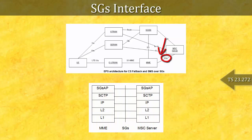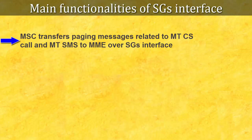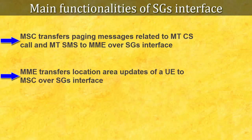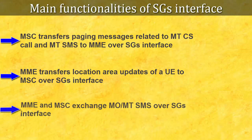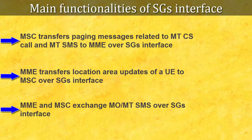This figure shows the protocol stack of the SGS interface. The main functionalities of SGS interface are: number one, MSC transfers paging messages related to MT CS call and MT SMS to MME over SGS interface; number two, MME transfers location area update of a UE to MSC over SGS interface whenever UE sends combined tracking area and location area update; number three, MME and MSC exchange MO or MT SMS over SGS interface. For MO or MT SMS there is no need for CSFB — UE remains in the LTE network.